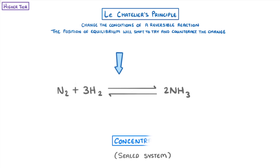The very last change that we need to look at is changes in concentration. For example, if we added more nitrogen to our sealed container, it would increase the concentration of nitrogen. So to oppose this change, the equilibrium shifts to the opposite side, which in this case is the right, and forms more ammonia.